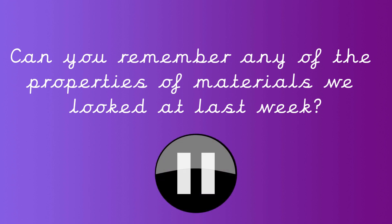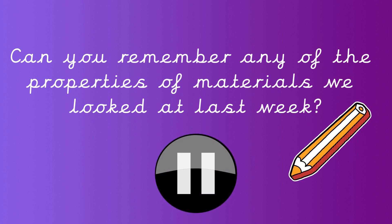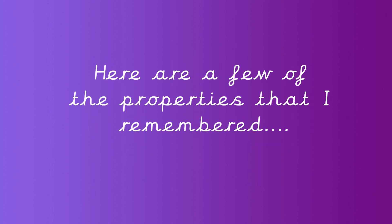Press pause now and see how many you can write down. Here's a little tip for you — we started off by looking at opposites. So for example, what's the opposite of soft? That's right, hard! Now how many can you write down? Here are a few of the properties that I remembered. I've also included some of the materials that have that property too.